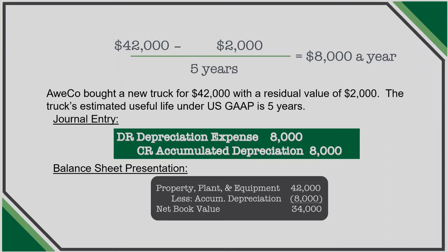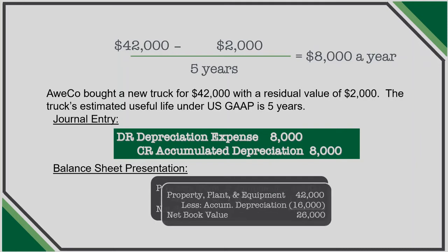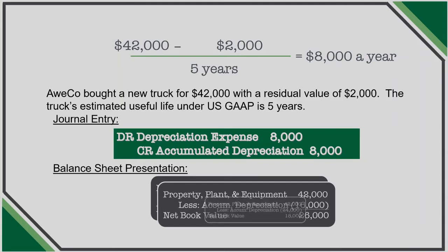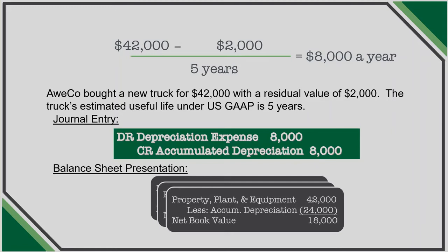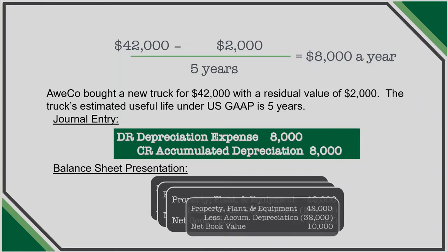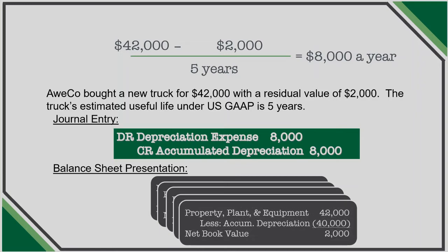The journal entry under straight-line depreciation will be the same every single year — $8,000 per year. However, the balance sheet will be reduced each year by $8,000 as accumulated depreciation increases. At the end of five years, the asset will be reduced by all $40,000 of depreciation, leaving a net book value of $2,000. The asset will remain on the books until it's disposed of or sold, at which point the asset and accumulated depreciation are removed and any gain or loss is recognized.